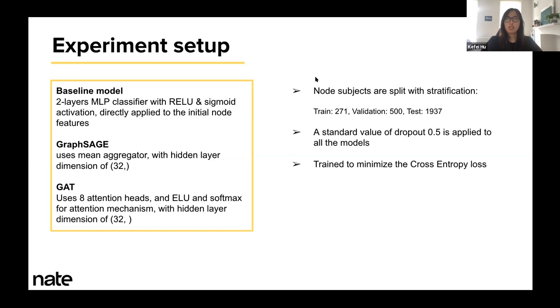Here is the experiment setup for this demo. To keep a fair test, all the node subjects are split in this proportion. There's a standard value of dropout applied to other models, and they're all trained to minimize the cross-entropy loss. To evaluate the performance of our models, we will mainly be using test accuracy, but we will also use a qualitative approach where we assess the structure of the embedding using t-SNE plots in 2D.